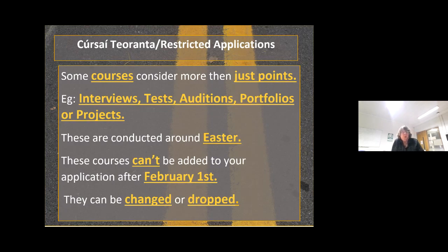In addition to your points, some courses are called restricted courses, and they require more than the Leaving Cert — there may be an interview, tests, auditions, portfolios, or projects. Those courses must be on the CAO on the 1st of February, because as soon as the student applies for a restricted course, the CAO contacts the college immediately, and then they will be called for whatever it is — interview, test, audition, portfolio — and these usually happen around Easter time. So it's too late to apply for a restricted course after the 1st of February. However, if they change their mind and decide they no longer require it, they can take it off when they come to the change of mind. Courses like medicine, art, music, or architecture, depending on the course, require more than the Leaving Cert.